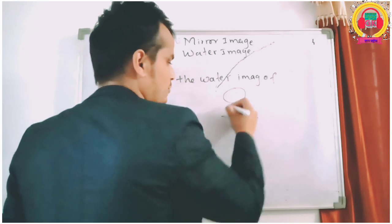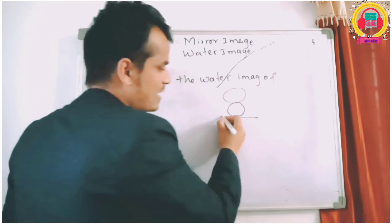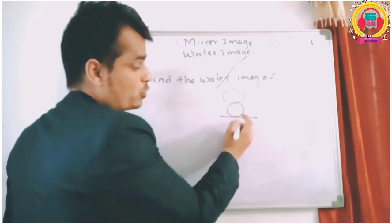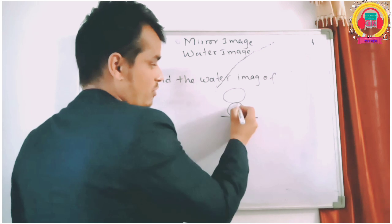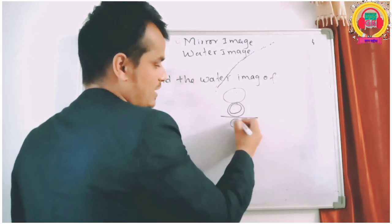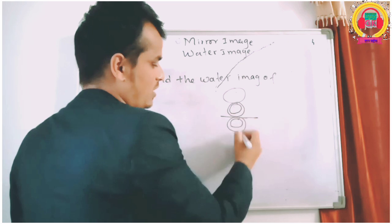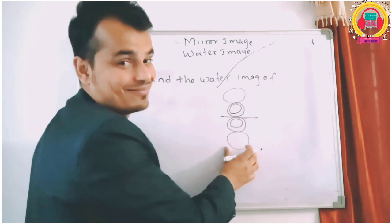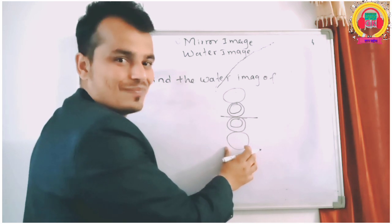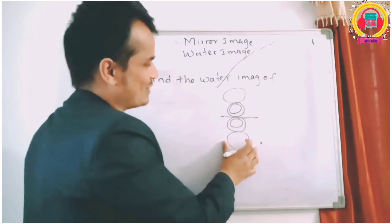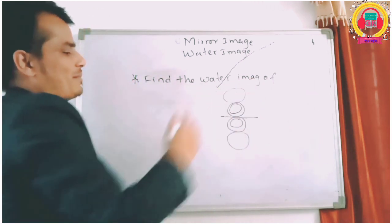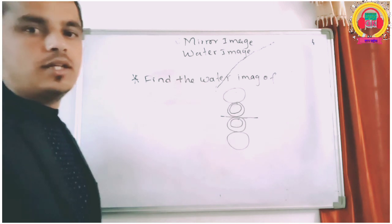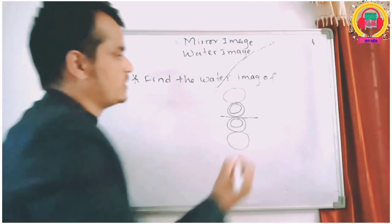This is the object we have to ask. If you are using the water, you will see the image. That is the image. It will double the image. If you are using the image, you will see it. Now, if you're using the image of water, you will see that.